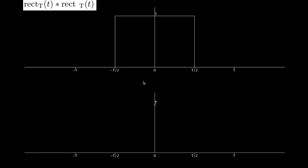We've got one rect function drawn here. The width of the rect function is t, so it goes from negative t/2 to t/2, and at the bottom we're going to be drawing the result of the convolution. The height of the rect function is 1, so the total area inside that rectangle is going to be t.